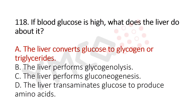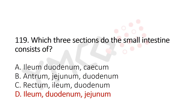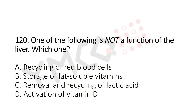Now Question 119: Which three sections does the small intestine consist of? Option A: ileum, duodenum, cecum. Option B: antrum, jejunum, duodenum. Option C: rectum, ileum, duodenum. Option D: ileum, duodenum, jejunum. The answer is Option D: ileum, duodenum, jejunum.